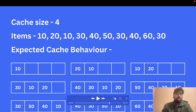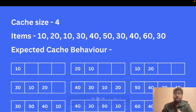Now we get 30 again. We remove 30 from its current position and push it to the front, so the new cache looks updated. When we get 40, 40 is already in the cache but now it becomes the most recently accessed, so we remove it from its position and push it to the front.